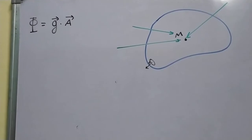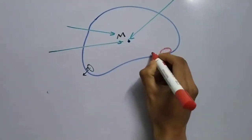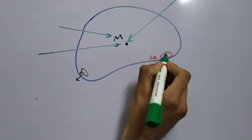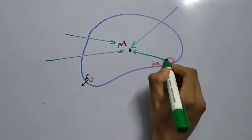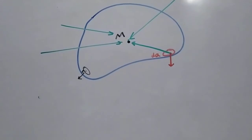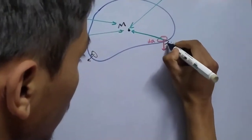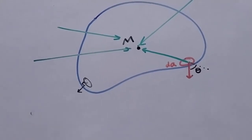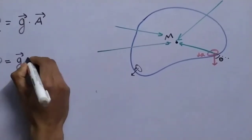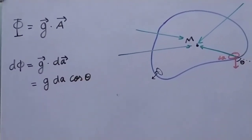We start by considering a small area element dA. The gravitational field through this area looks like this, and the area vector is normal to the surface. If the angle between them is θ, then the small flux dφ equals the gravitational field at that point times dA times cosθ.